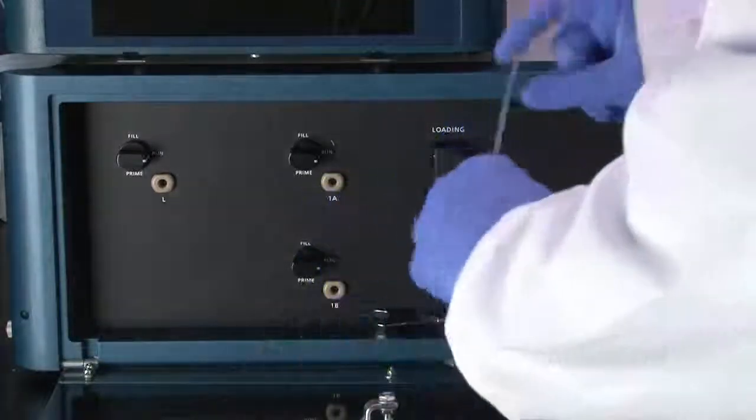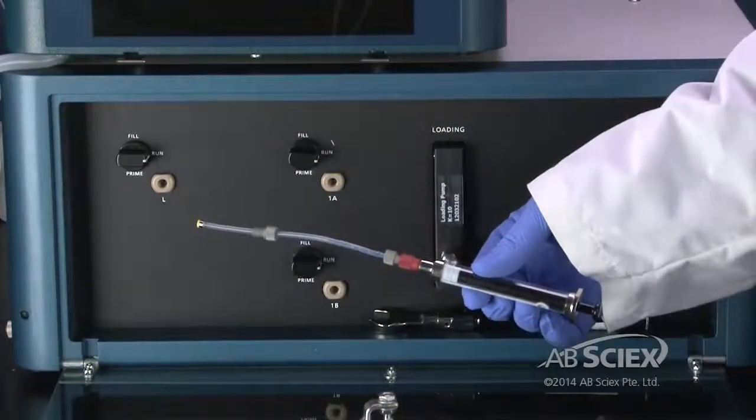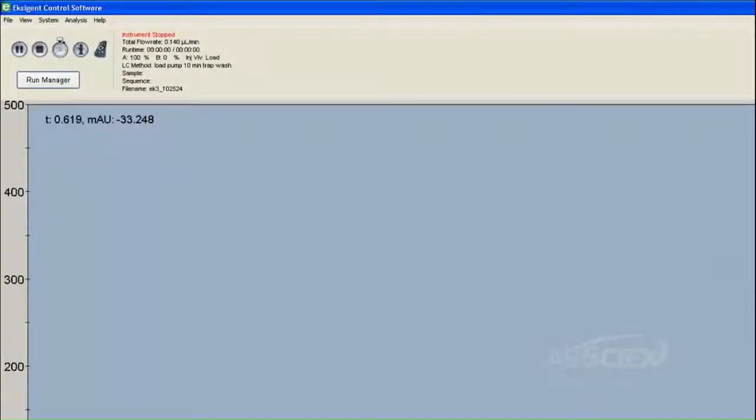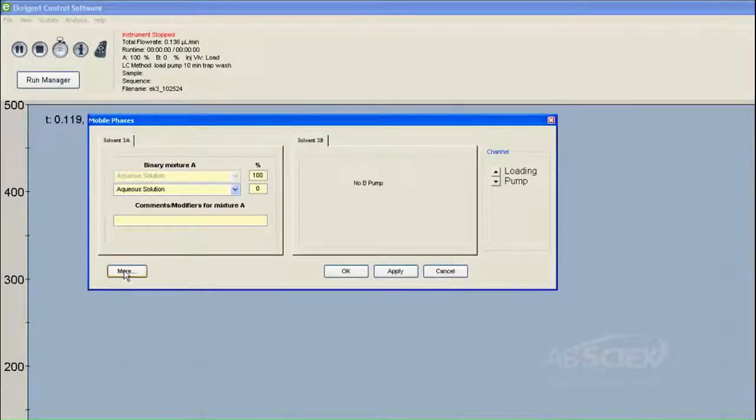Assemble the priming syringe. Empty the priming syringe. Open the Exigen software. Click System Mobile Phase window and select the appropriate channel. Click More.